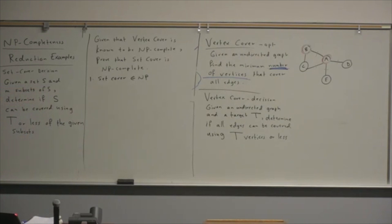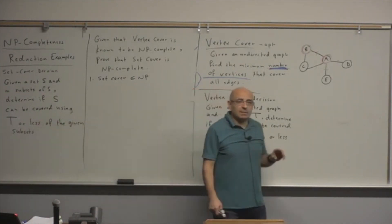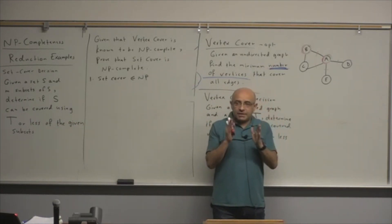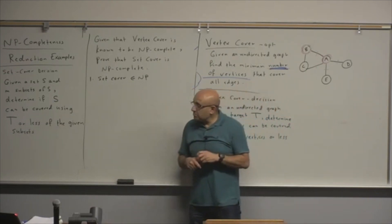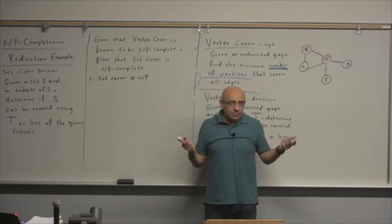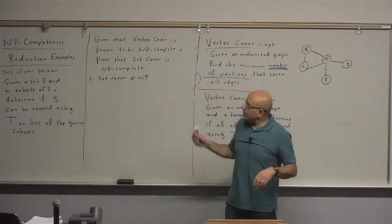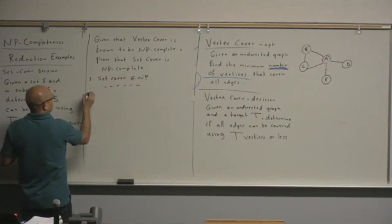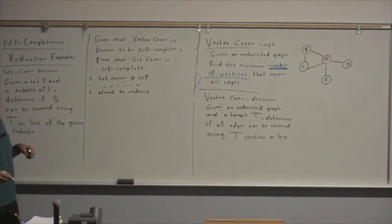To verify Set Cover in polynomial time: someone gives you T subsets. First, verify that the number of subsets is T or less. Then take the union — if the union gives you the original set S, you're done. Verifiability is usually very easy. Now the tricky part is the reduction. We need to reduce vertex cover to set cover.